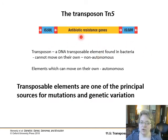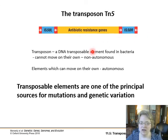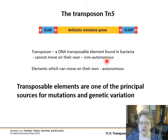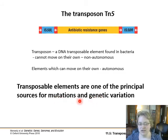Tn5 is an example transposon. Transposons are a DNA transposable element found in bacteria that can't move on their own — there's a whole separate system for moving them around. In general biology terminology, transposon and transposable element are often used synonymously. Transposable elements that cannot move on their own are termed non-autonomous, whereas elements that can move on their own are called autonomous. These transposable elements are one of the principal sources for mutations and genetic variation because they're jumping and swapping, and maybe cutting out a little extra and disrupting a gene — so lots of genetic variation occurs within our genomes thanks to transposable elements.